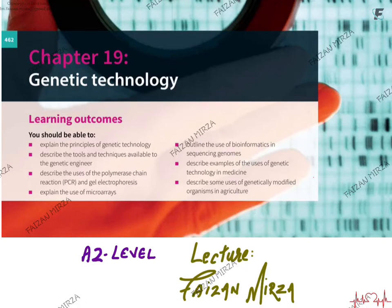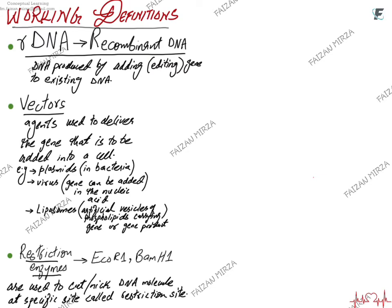Hello students, this is Fahdhan Mirza. We are discussing the topic of genetic technology, starting with some working definitions you should be very thorough with. For example, recombinant DNA: recombinant DNA is DNA which is produced by adding a gene or editing a gene into the existing DNA. There is a DNA molecule already present in a cell, and you add another gene into it. When the added gene is incorporated into that existing DNA, it becomes recombinant DNA.